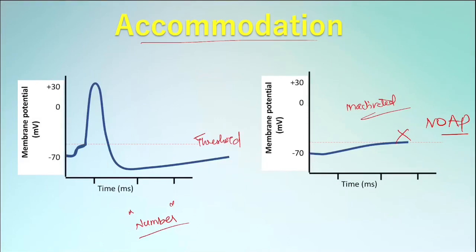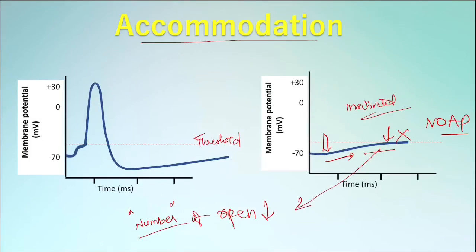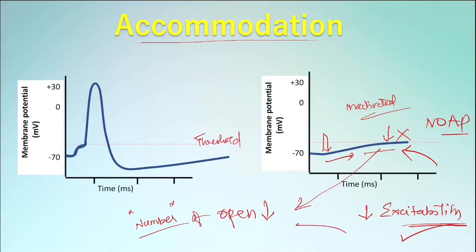Adequate numbers of sodium channels must be in an open state simultaneously to bring about the positive feedback and generate an action potential. If the membrane depolarizes slowly, the sodium channels open and inactivate gradually, so the simultaneous number of open channels will not be adequate to initiate positive feedback. In certain cells, a higher stimulus strength might be required at this point. This decrease in excitability occurs because the number of sodium channels available in the closed state has decreased — this property is called accommodation.